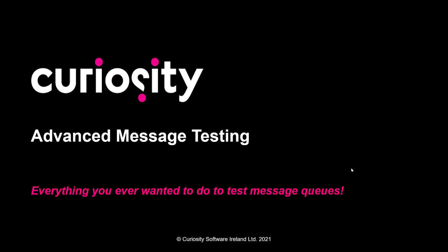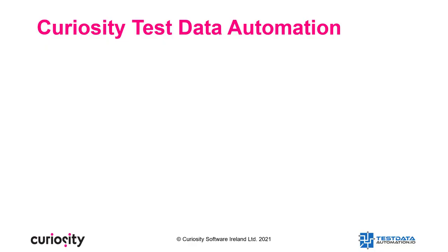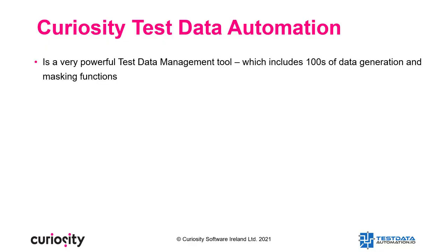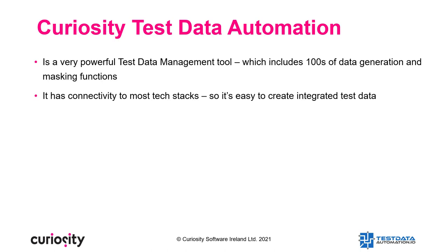Advanced message testing — everything you ever wanted to do to test messages. Curiosity Test Data Automation is a very powerful test data management tool which includes hundreds of data generation and masking functions. It has connectivity to most tech stacks, so it's easy to create integrated test data. It has a full DevOps-focused RPA tool.